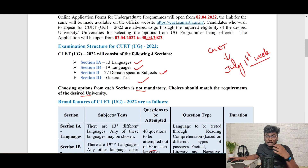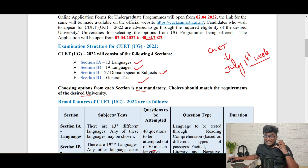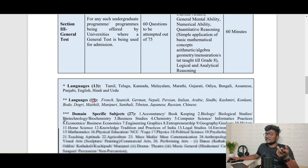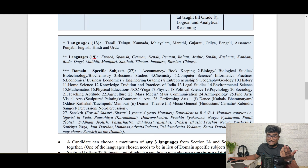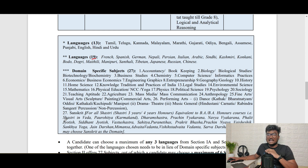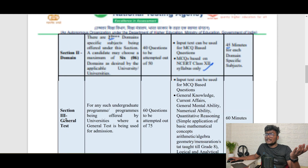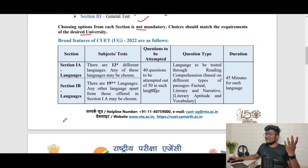In Section 2, for example, if you are going for engineering and that college says a good score in Maths, Physics, Chemistry is enough, then you select only those in Section 2. Out of 27 domains in Section 2, you can select at most 6. I suggest going for Maths, Physics, and Chemistry — that would be better since you are already preparing for JEE Mains and other exams, so it will make things easier.